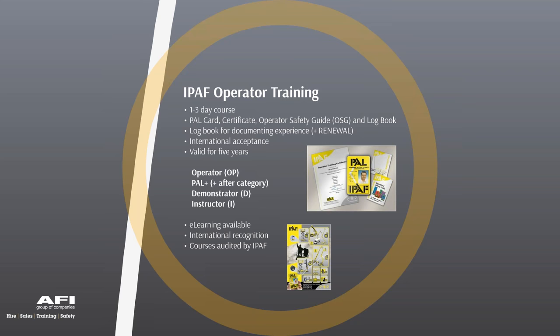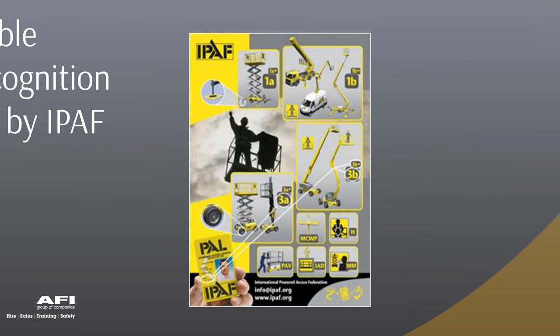Courses are audited by IPAF through unannounced and training centre audits, ensuring quality and consistency. Reviewing the IPAF category poster: categories 1A, 1B, 3A, 3B, plus harness, mast climbing, PAV, IPAF Appointed Operator (IAO), and MEWP manager. The '3' means the machine can be driven when elevated. 'A' means the central projection of the platform at maximum inclination will never be outside the tipping lines — so a 3A goes straight up and down, with a potential slide-out deck.